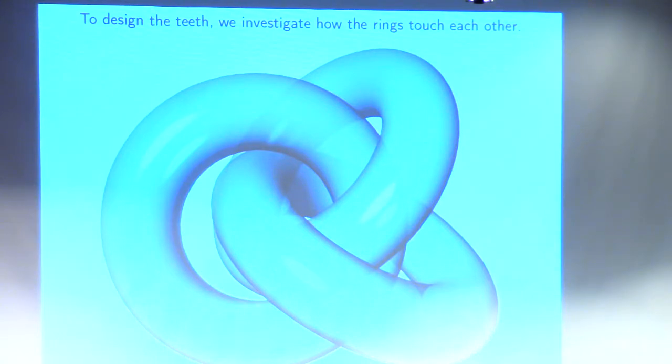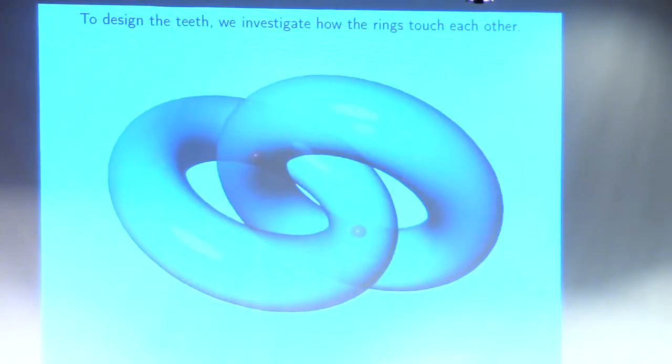I'll say a little bit about how the tooth design was made. So I've got these three rings sitting in space. And as I rotate them against each other, they're going to touch in various places. Those are the places where they touch and the places where I need gear teeth. So let me take one of them away. These two points are the places where these two rings touch.